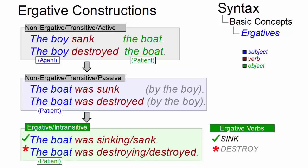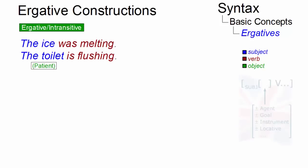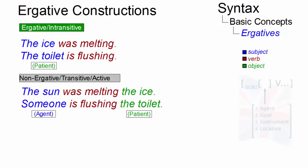Here are further examples. The ice was melting and the toilets are flushing involve ergative verbs that have transitive counterparts: the sun was melting the ice and someone is flushing the toilet.